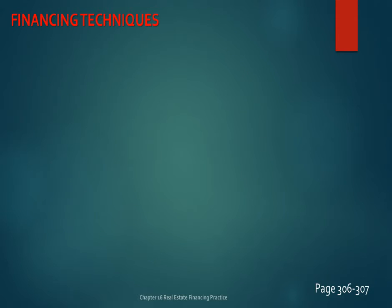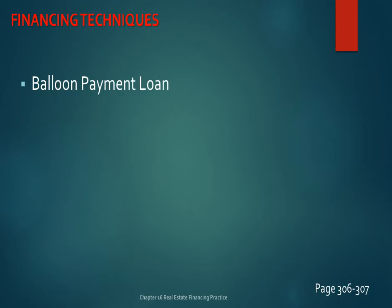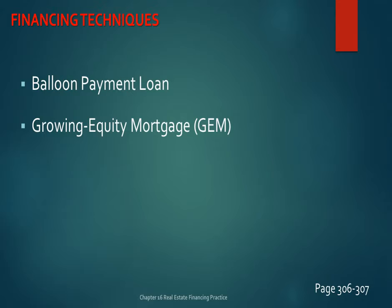ARMs were one of the culprits that created the housing crisis — when they reset, people simply weren't able to pay the increased mortgage payments. Another financing technique is the balloon payment loan. A balloon payment is where you pay your monthly payments, and then the last payment — say payment 360 — is a balloon payment, larger than the others.